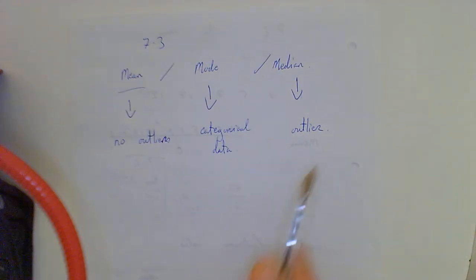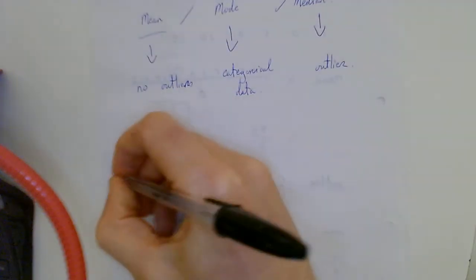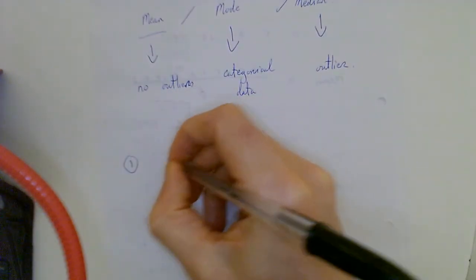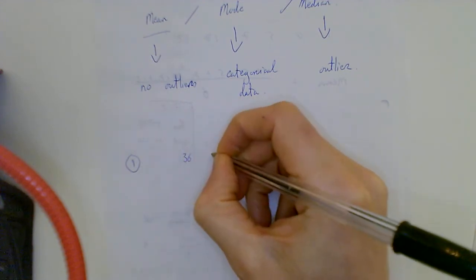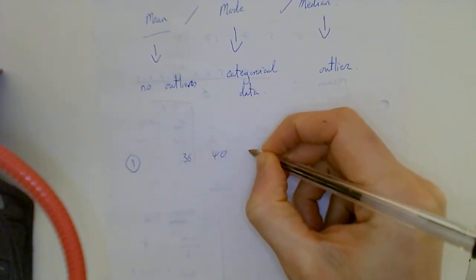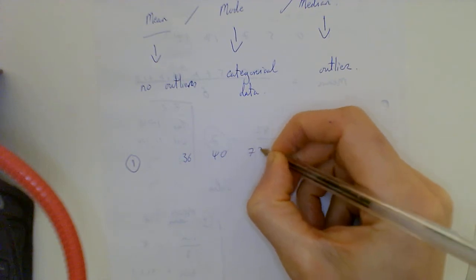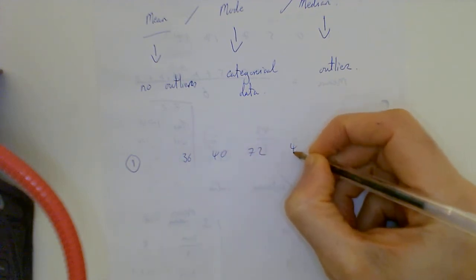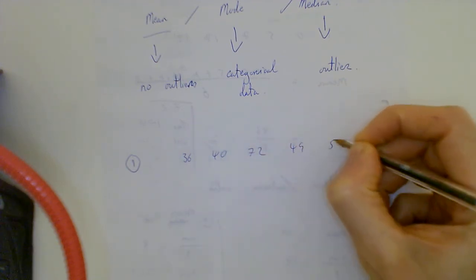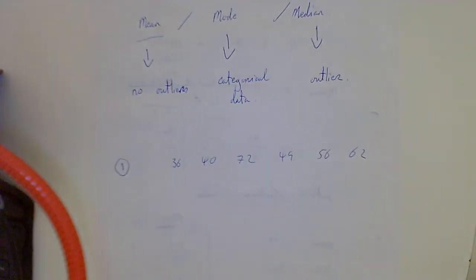So I'm gonna run through a few ones here now. Let's say first one, test scores: 36, 40, 72, 49, 56, 62. Find the best measure of average for us. Is it categorical? No, so mode's out. It's either mean or median. Is there an outlier? No.